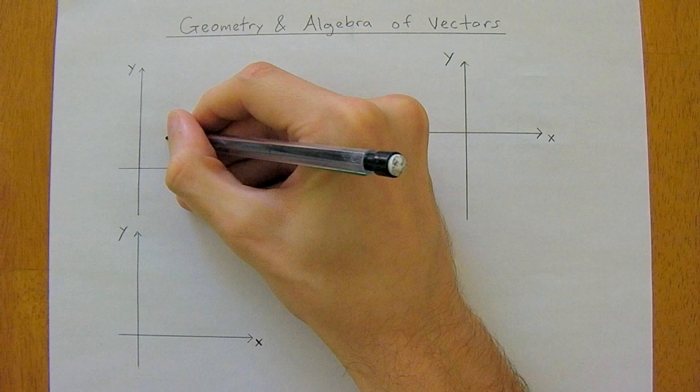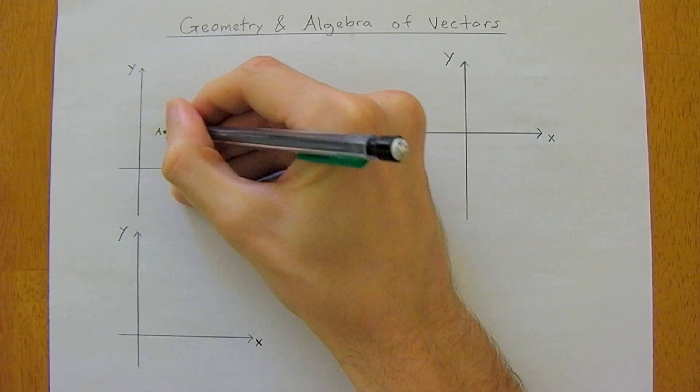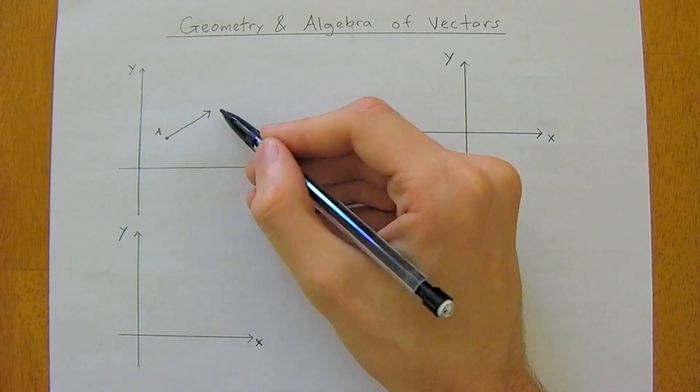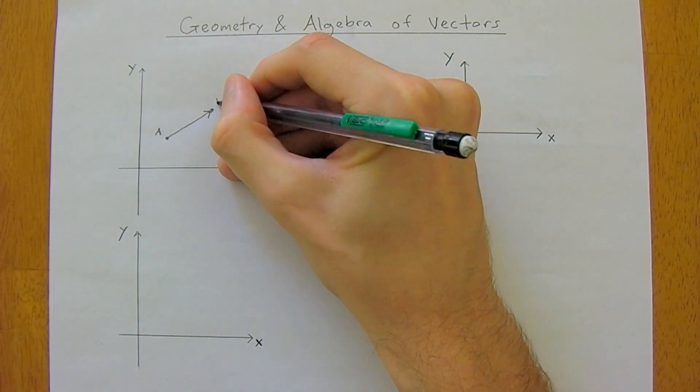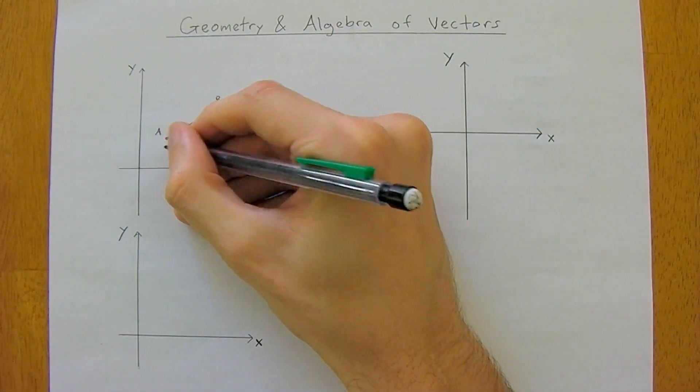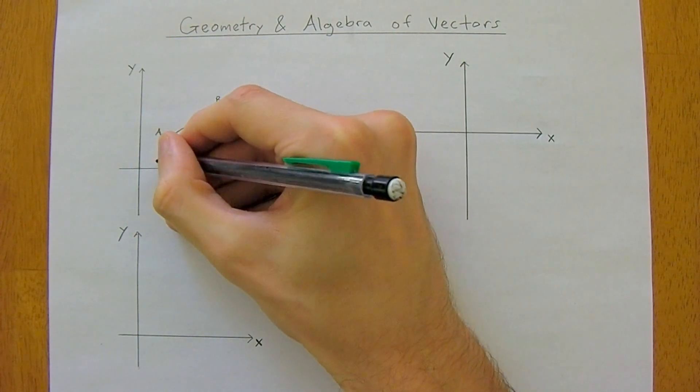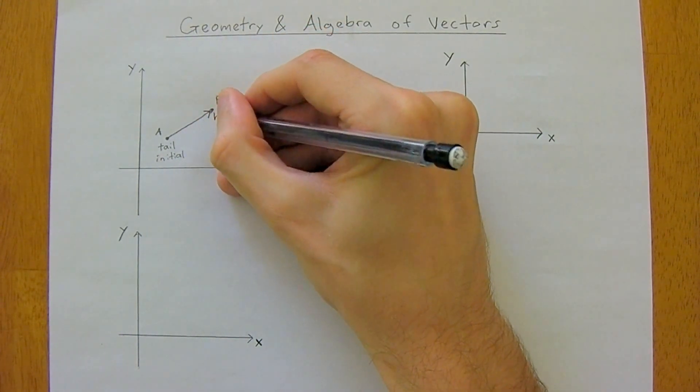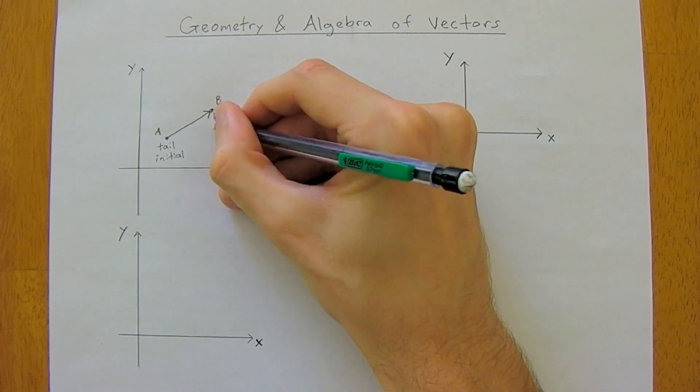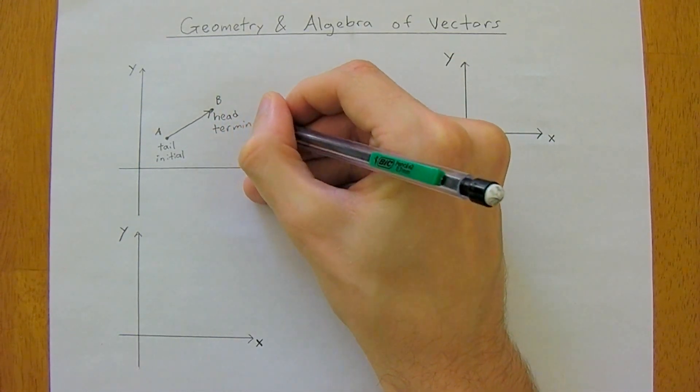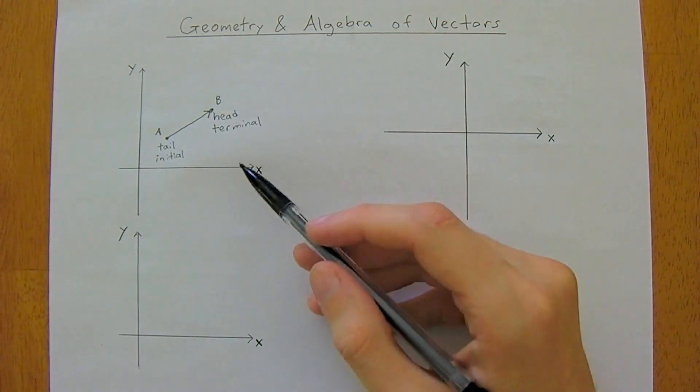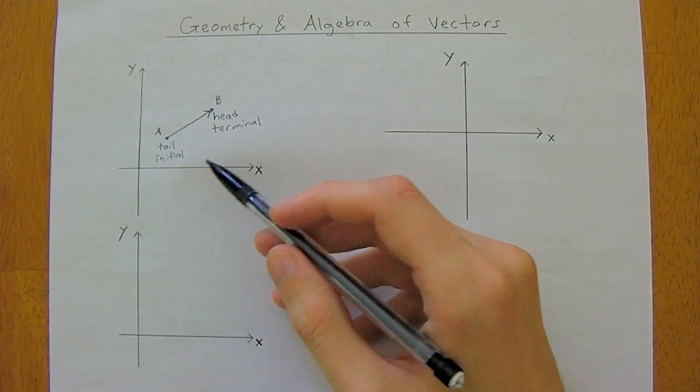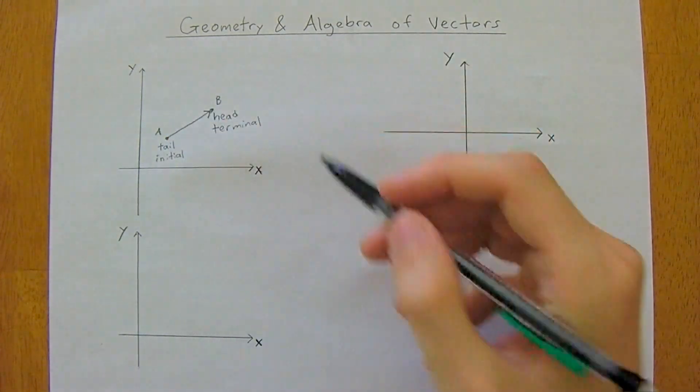Just to get you used to doing simple algebra and some of the geometry, say this is point A and we have a vector with a displacement or magnitude going out to point B. We would label this the tail or the initial point, and we would label this the head of the vector or the terminal point.